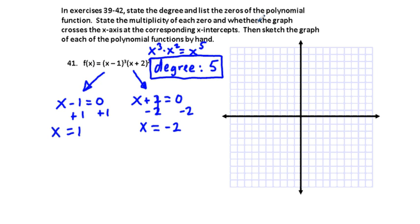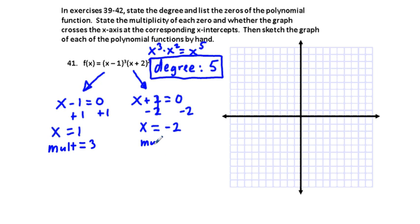We've listed all the zeros. Now we state the multiplicity of each zero. For x equals 1, we have quantity x minus 1 cubed, so the multiplicity is 3. For the zero at x equals negative 2, we have the factor squared, so the multiplicity is 2.